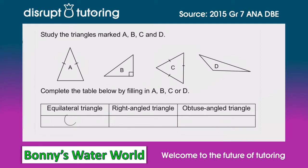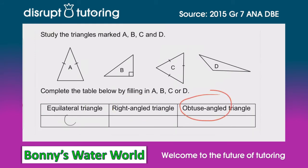Moving on to the right angle triangle — again, the hints are in the name. If you know these words, the hints are in the name and you'll never get this wrong. We've already spoken about B and we saw that there is a right angle, or a 90 degree angle, in the triangle. So the right angle triangle we're looking for is B.